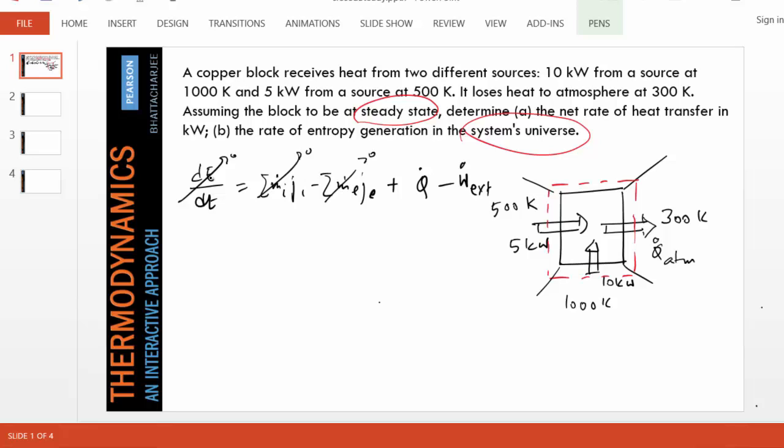So if we expand this equation, what does Q dot become? We know what goes in is positive. We use the convention: heat in positive, work in negative. So it is going in 5 kilowatts, another 10 kilowatts, and this atmospheric heat is coming out.